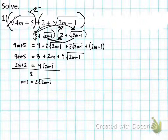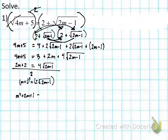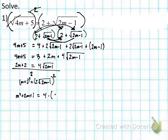Squaring the left side: (m + 1)² gives m² + 2m + 1. The right side: 2 squared is 4, and √(2m−1) squared cancels out, leaving (2m − 1). Distributing the 4: 4 × 2m = 8m, 4 × (−1) = −4. So the right side becomes 8m − 4. Now I have like terms: M's and constants on both sides, so I subtract 8m and add 4 to both sides.